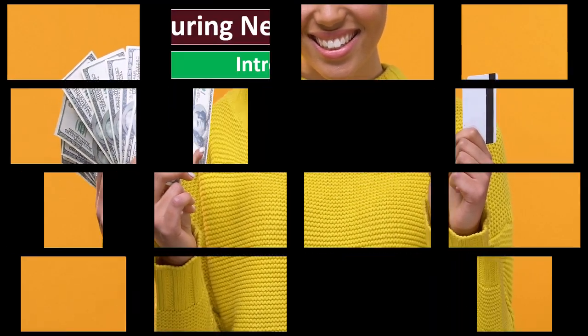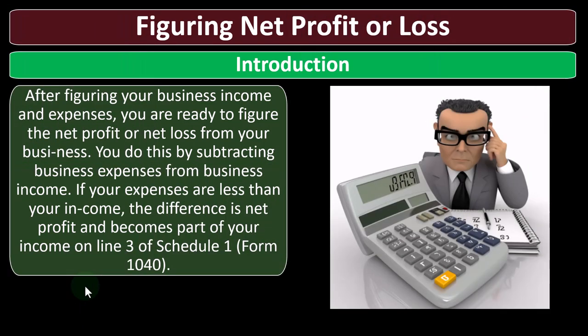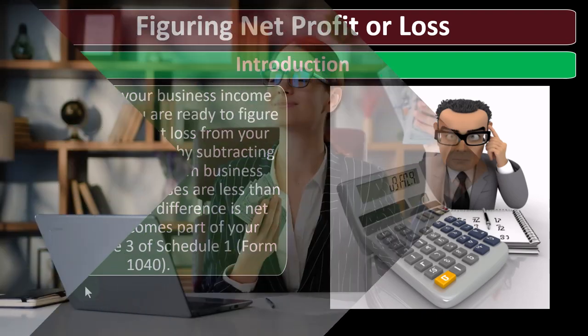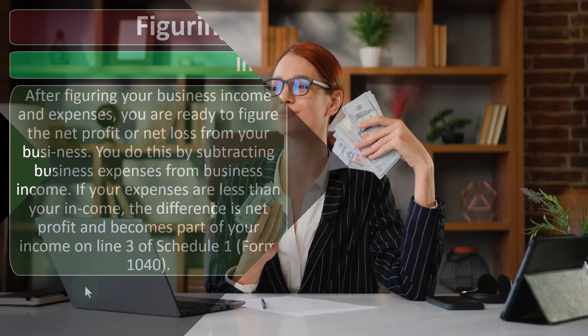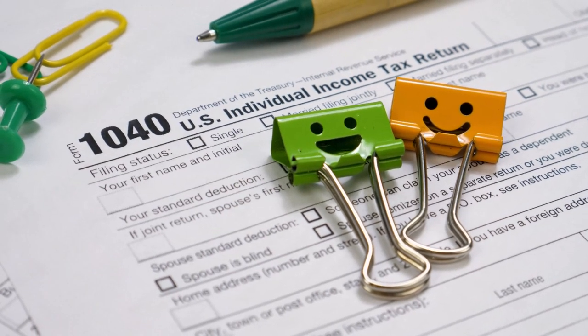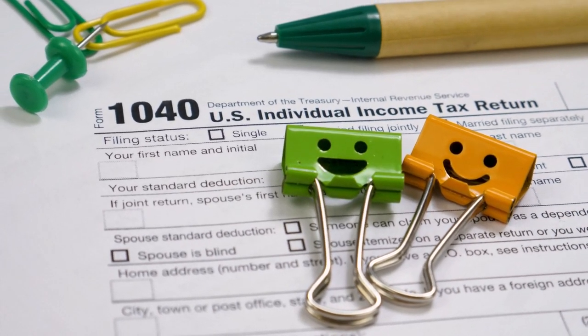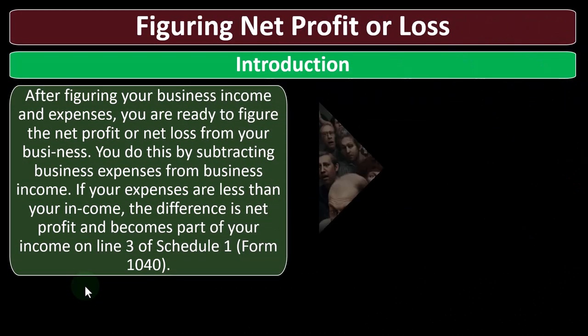If your expenses are less than your income, the difference is net profit, which becomes part of your income on line three of Schedule 1, Form 1040. If your expenses are less than your income, that means you have more income than expenses — income that will be flowing through and be taxable, ultimately going into the first page of Form 1040 and increasing your income to be taxed.